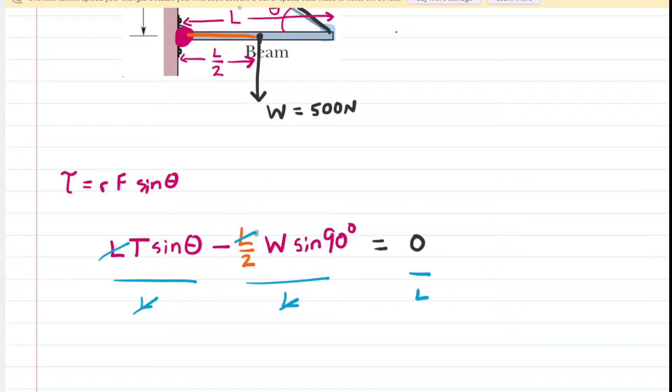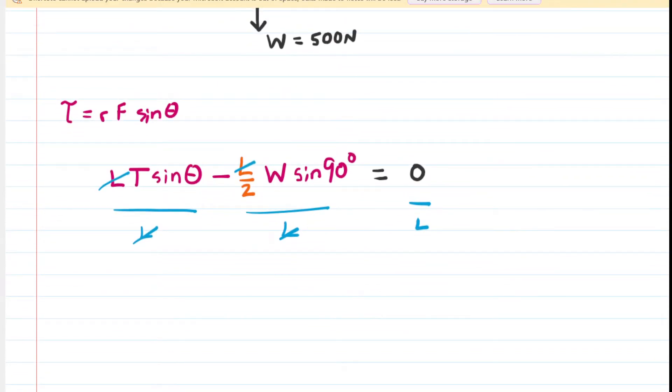So let's just rewrite the equation accordingly. We would have the tension times the sine of theta minus 1 half, there's that 1, W. The sine of 90 is 1. You can verify that on a calculator. So we don't even need to write that in here.